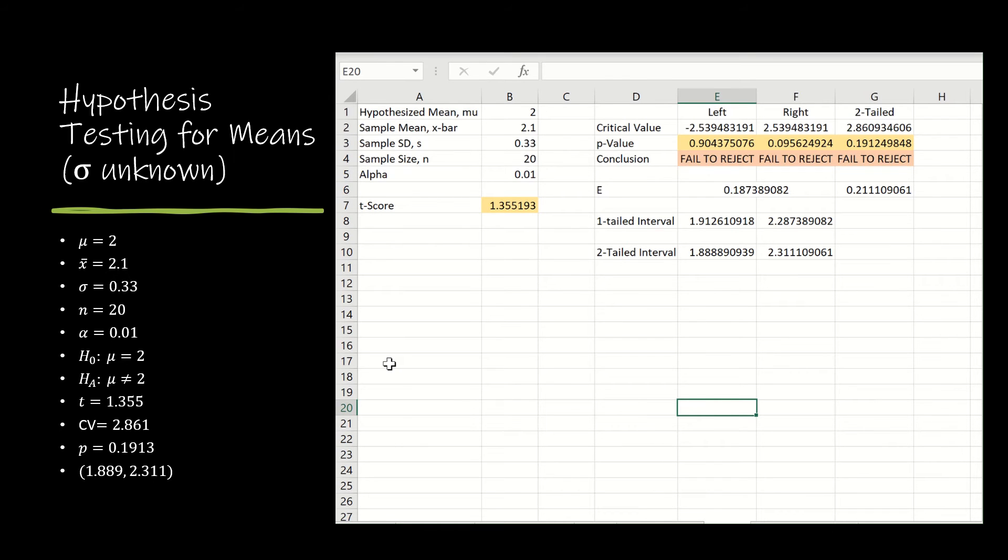Let's take a look now at the 2-tail test in Excel. As you can see, I'm using the exact same spreadsheet as I did for the last video. I'm just going to add this column.